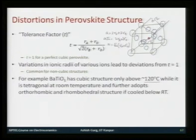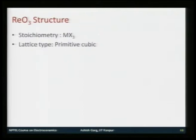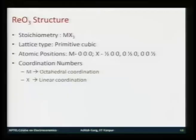Further cooling of barium titanate brings it to orthorhombic and then rhombohedral structures. These are your perovskite-structured compounds. The next structure in the non-FCC series is the rhenium oxide structure, based on which there are some further useful compounds. The stoichiometry here is MX3, so for each cation you have three anions, and the lattice type is again primitive cubic.